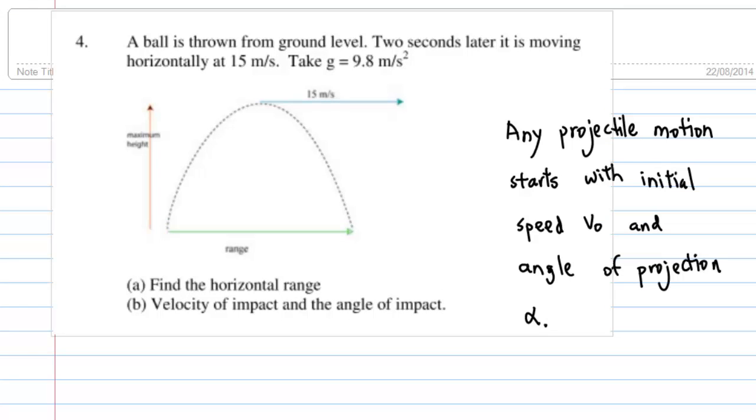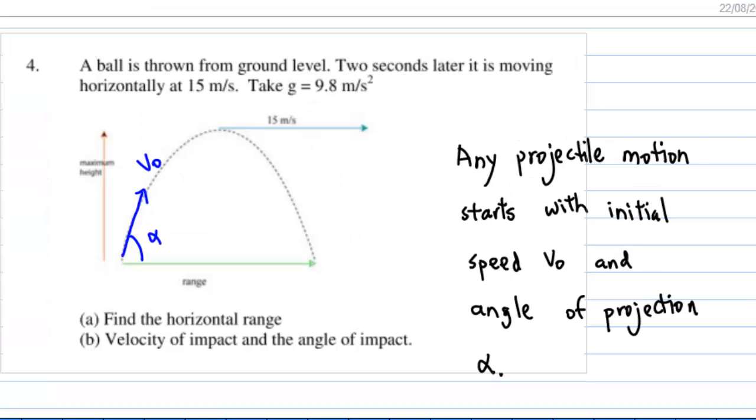For any projectile motion, you need information of initial speed V0 and angle of projection alpha. Let's indicate V0 and alpha on the diagram.